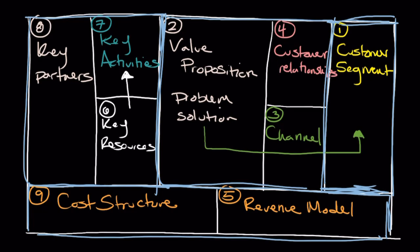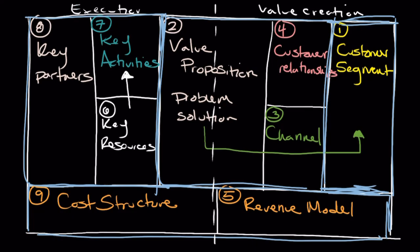Another observation: if you were to cut the canvas in half right down the middle, the right-hand side is all about your customer — your segment, relationships, channels, revenue models, value proposition — really all about value creation and how you're going to capture value for yourself. The left-hand side of the business model canvas is really focused on execution — what are the things we have to do to be able to attain the right-hand side of the canvas? That's a general observation I think is really useful.